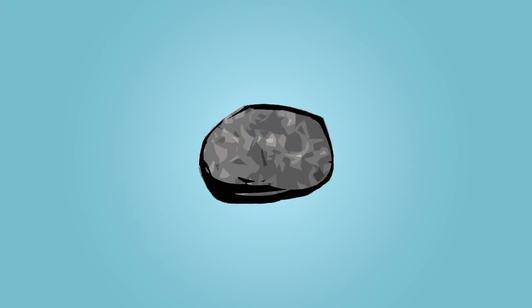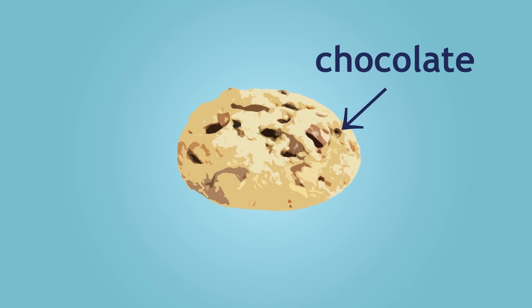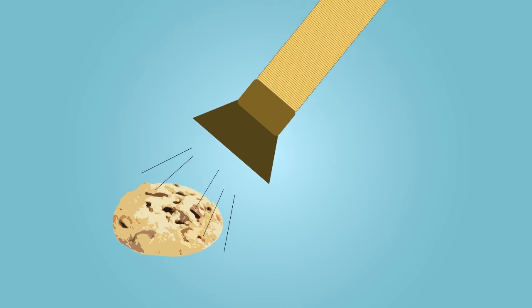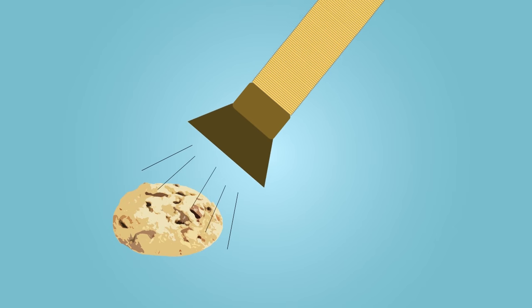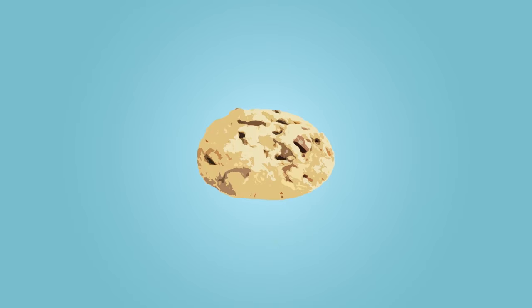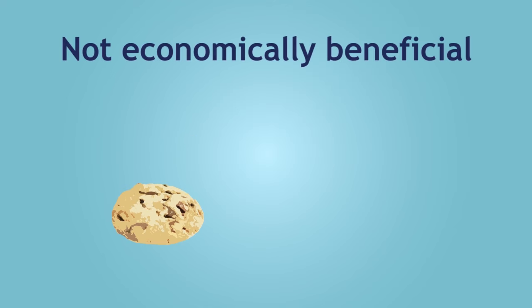We can think about an ore a bit like a chocolate chip cookie. We really want the chocolate. If there are more chocolate chips in the cookie, then the extraction process would be more economically beneficial, as more minerals — in this case, the chocolate — can be obtained. If there are fewer chocolate chips, then the extraction process may not be as economically beneficial.